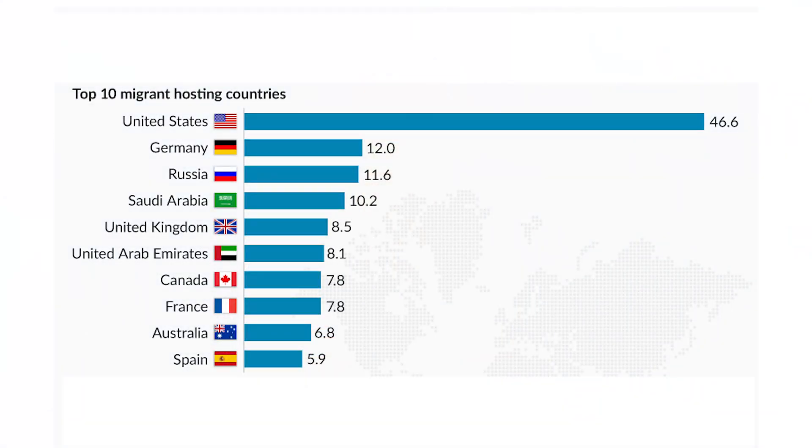Can you guess which country has the most number of legal immigrants? It is the United States of America, followed by Germany and Russia, as per UN reports. Immigrating to a different place is not an easy thing — there are a lot of processes, procedures, and documentation, starting from passports to ID cards to health reports, needed for immigration.